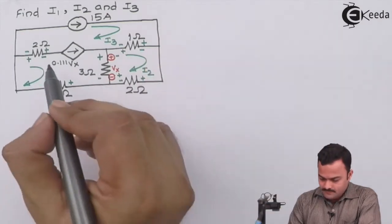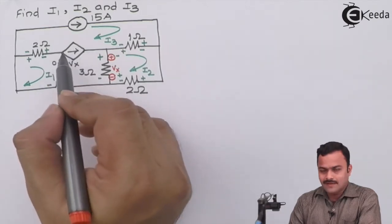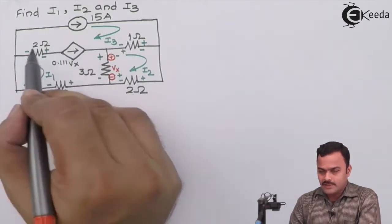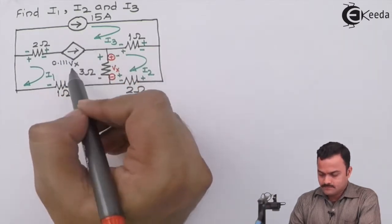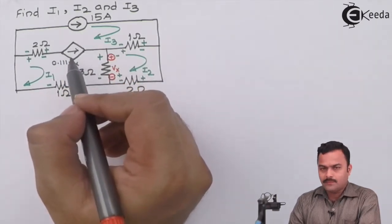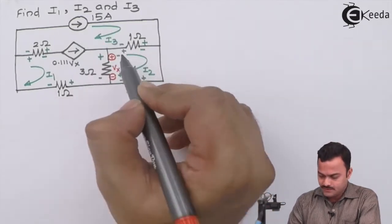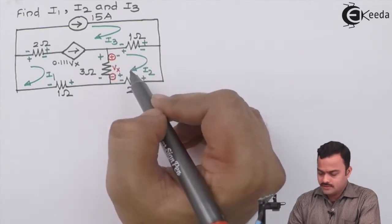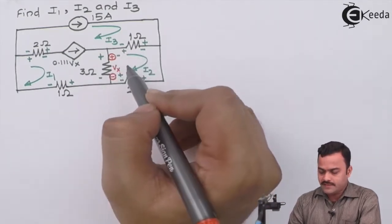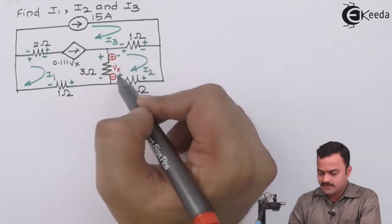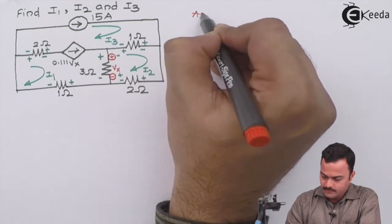In mesh one there is a current source, but it's not present alone in mesh one — it is between two meshes. Hence we will not apply KVL to mesh one for the time being. Mesh two is safe because we don't have such a condition there; three resistors are present, so we can apply KVL to mesh two first.